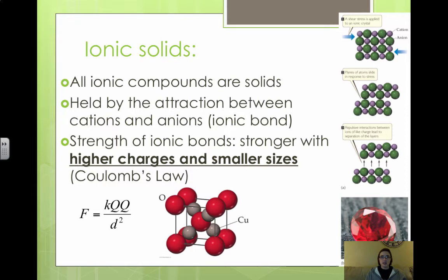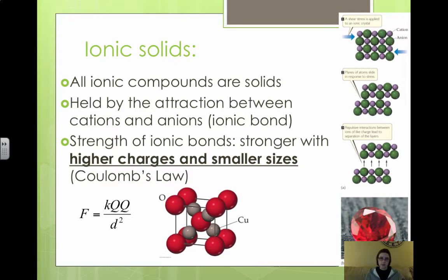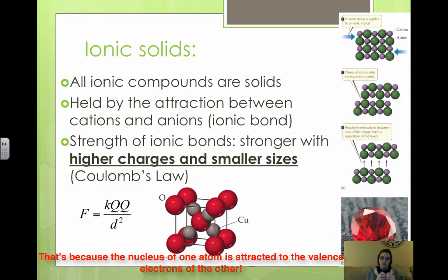Ionic solids are held together by ionic bonds. The high melting and boiling points of ionic compounds show how strong that ionic bond is. In terms of the strength of the ionic bond, remember that the ionic bond is stronger with higher charges and smaller sizes. So the higher the charge — plus 2 minus 2 versus plus 1 minus 1 — and the smaller the ions are, the stronger the bond. If the nuclei are very close together, you're going to have a stronger ionic bond.